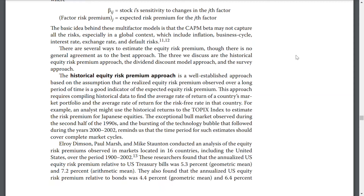The historical equity risk premium approach is a well-established approach based on the assumption that the realized equity risk premium observed over a long period of time is a good indicator of the expected equity risk premium. This approach requires compiling historical data to find the average rate of return of a country's market portfolio and the average rate of return for the risk-free rate in that country. For example, an analyst might use the historical return to the Topix index to estimate the risk premium for Japanese equities. The time periods of such estimates should cover complete market cycles.